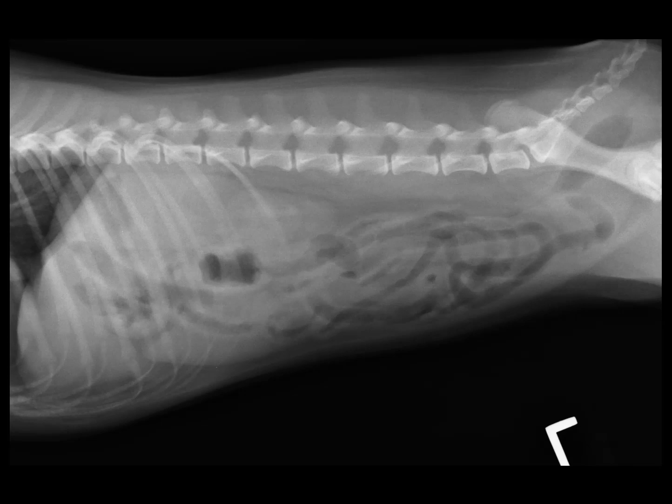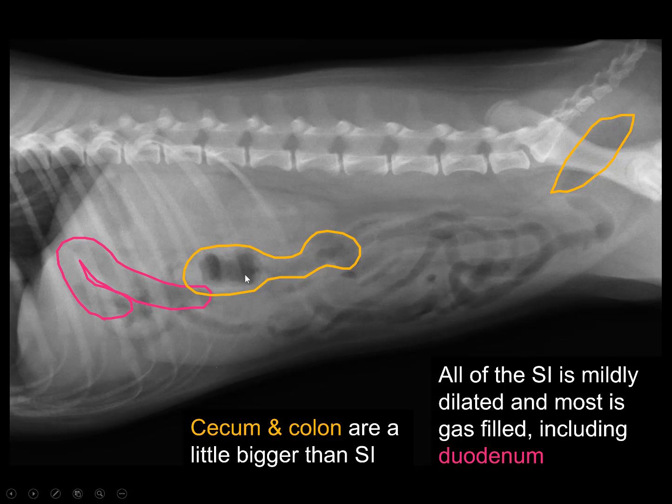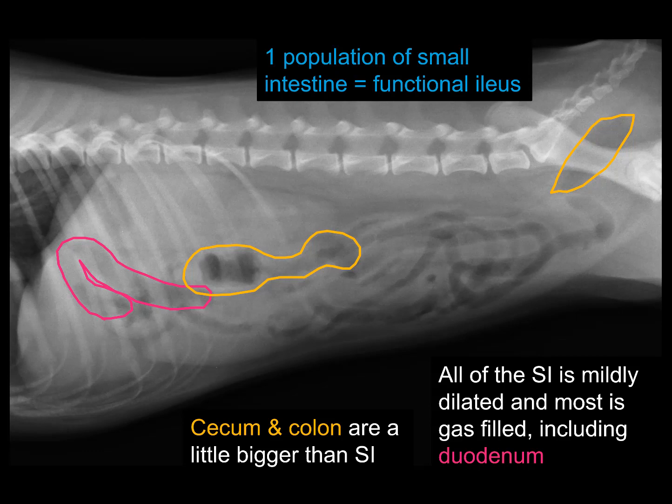So what does a typical functional ileus look like in real life? This patient is vomiting, it's a younger dog, and the radiograph is not that exciting. There are some intestinal segments that are a little bigger, but those appear to be large intestine. Most of the small intestine is a little bigger than normal and somewhat gassy, but not dramatically so. Compared to vertebral bodies it's not 1.6 or 2 times the height of L5 — it's mildly distended, relatively uniform, and relatively diffusely affected. One population of small intestine, all about the same diameter, diffusely affected and mild — this is a functional ileus.